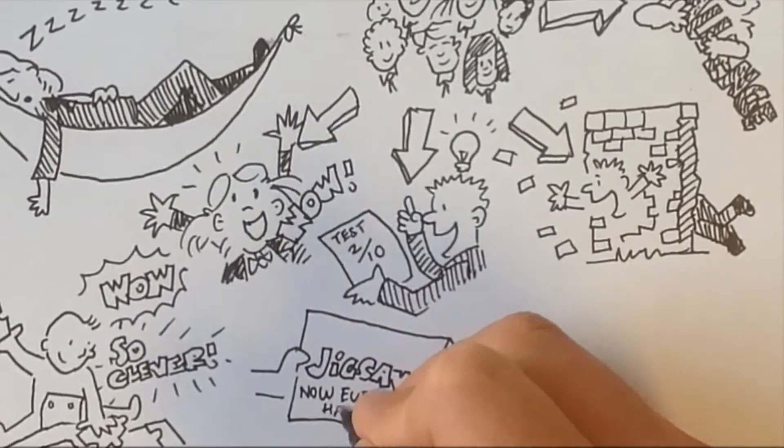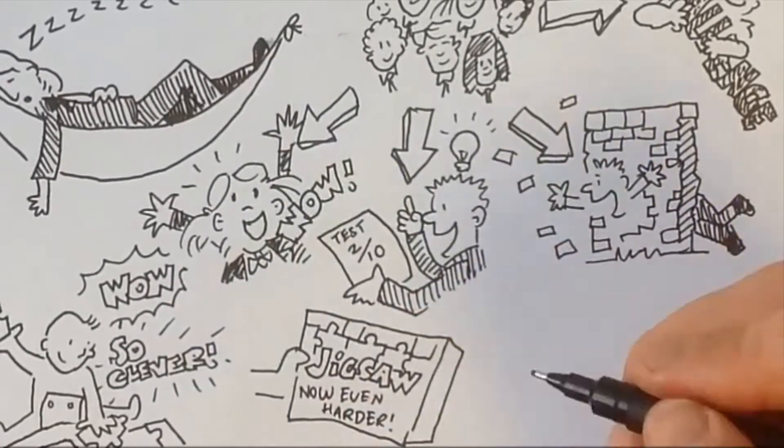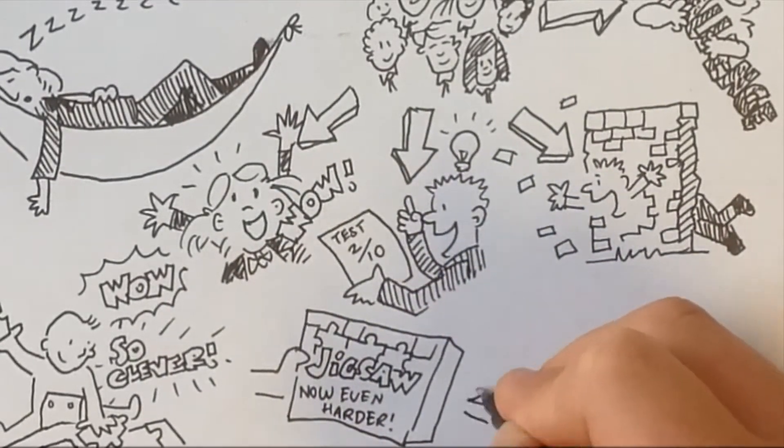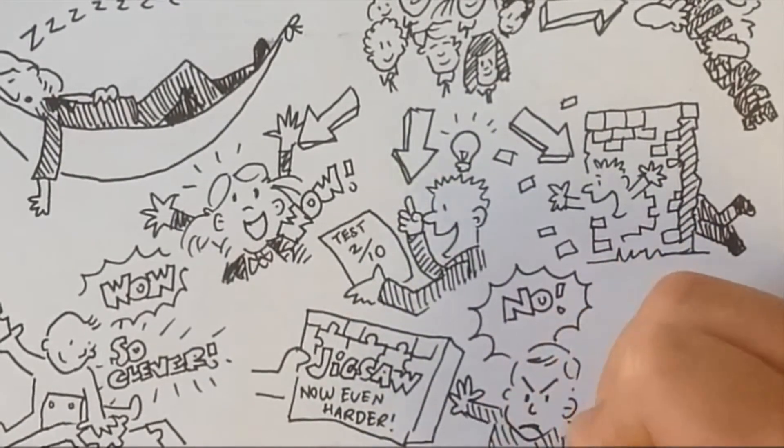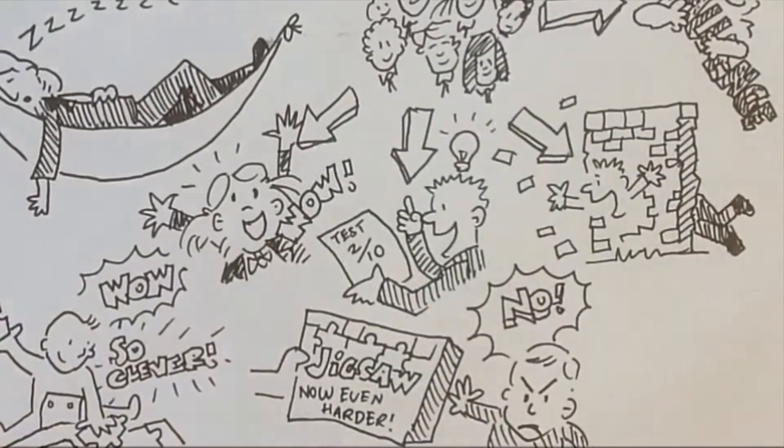But he wouldn't attempt to do the harder ones. He would just do one or two of the easier jigsaws over and over again and get quite upset when we pushed him to try something harder. I'm still working on changing his fixed mindset five years later.